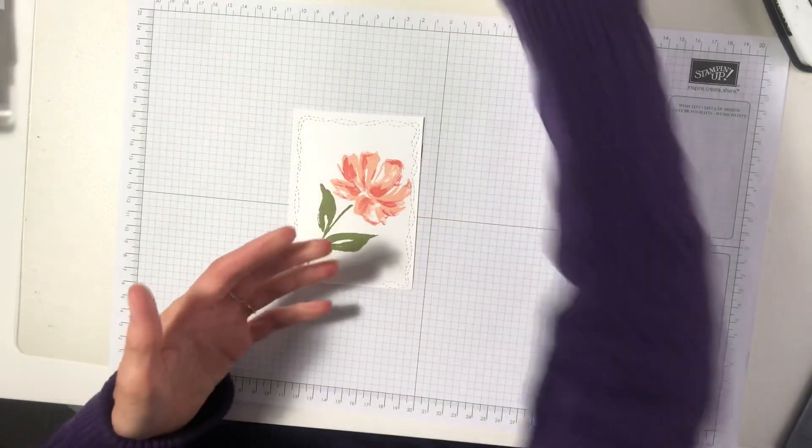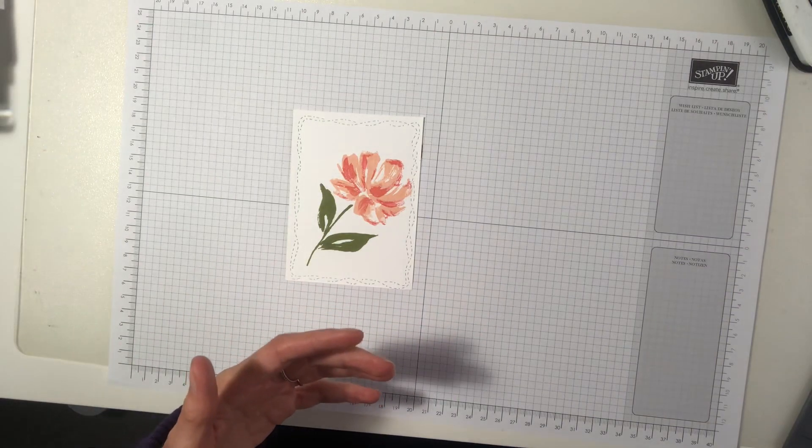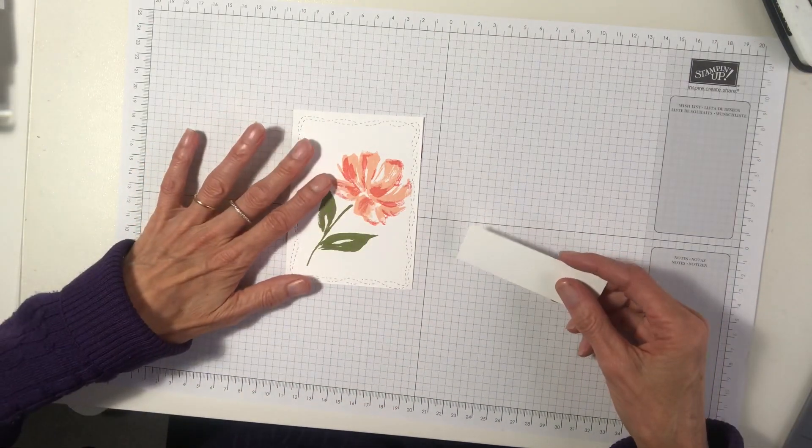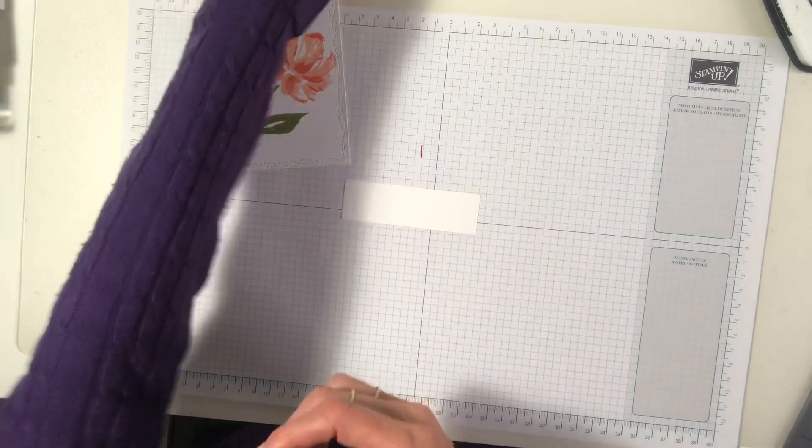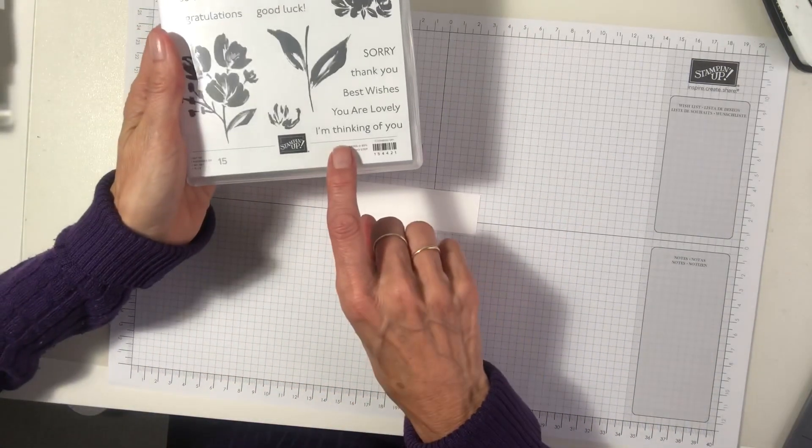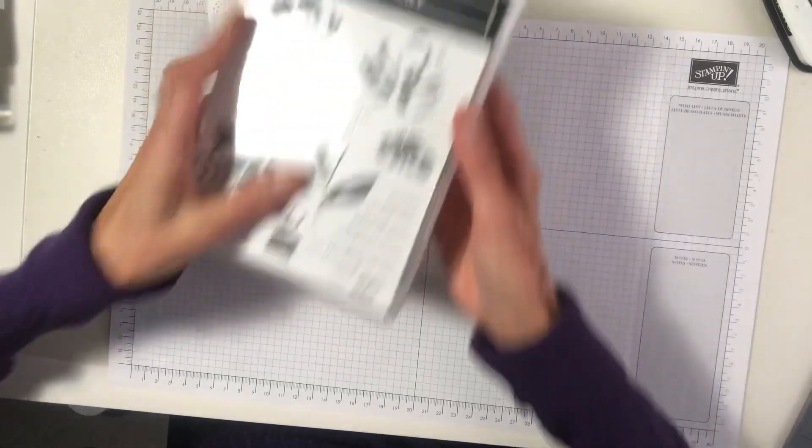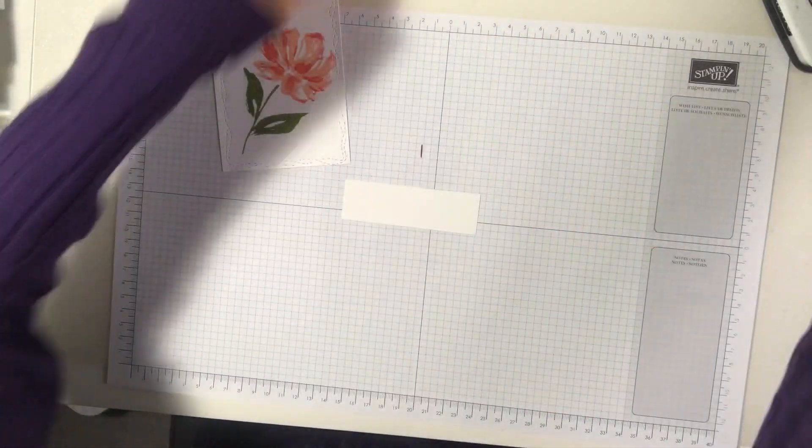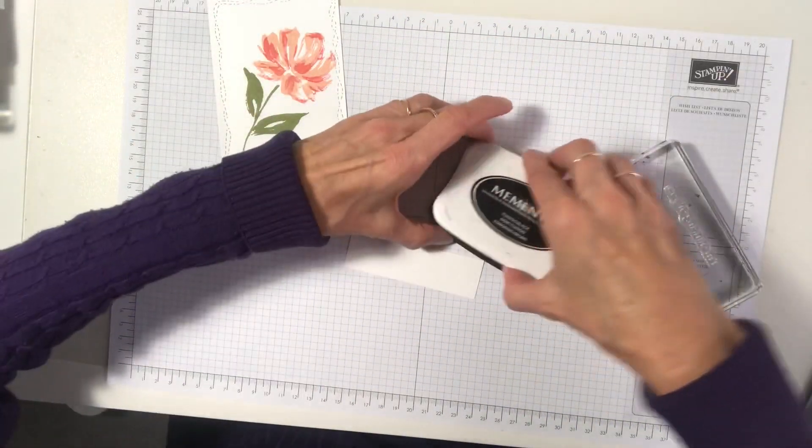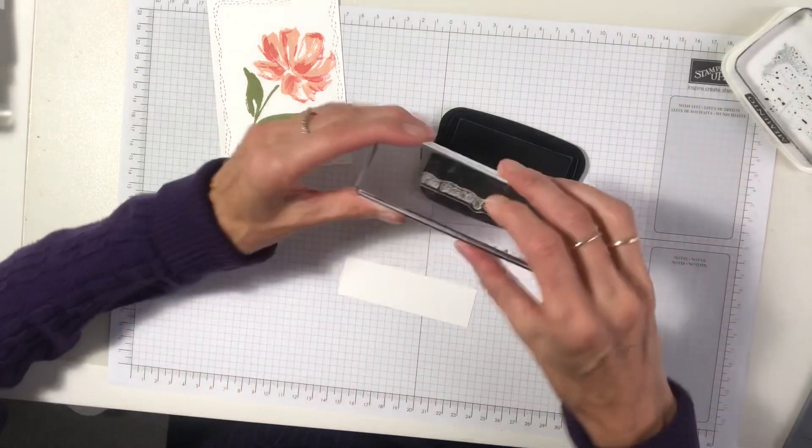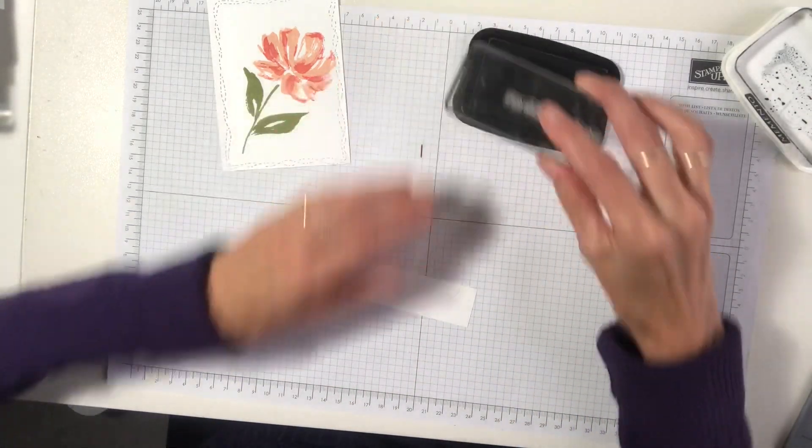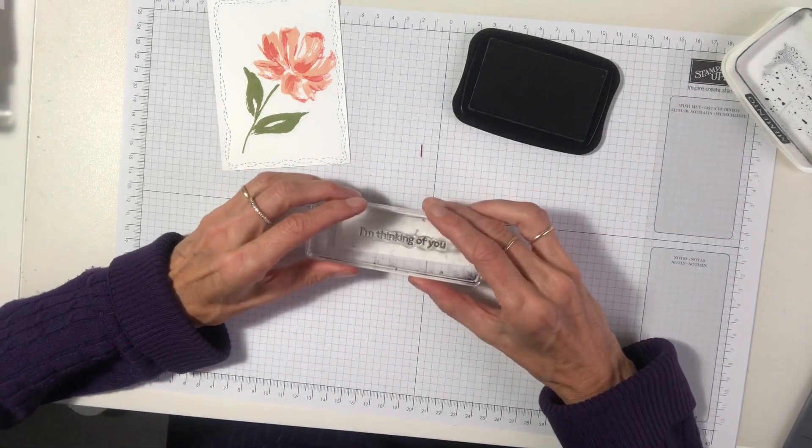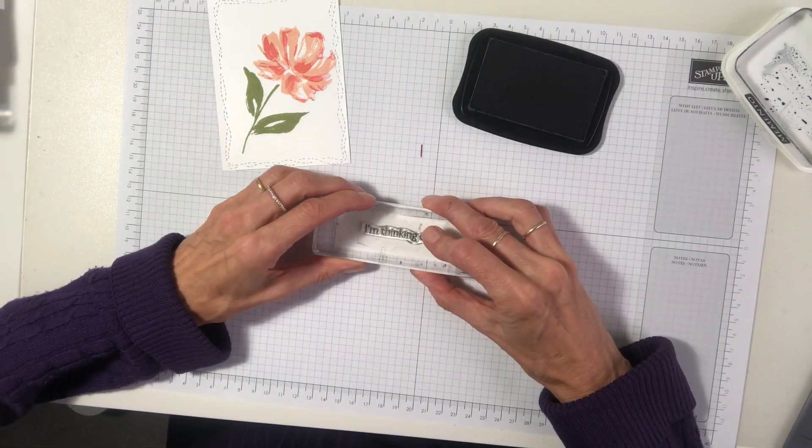Right. Okay, so I want to stamp the sentiment since we've got our flower happening. Let's stamp our sentiment. I'm choosing the sentiment on this art gallery one. I'm thinking of you. So we'll stamp that in the black. Press that down firmly.